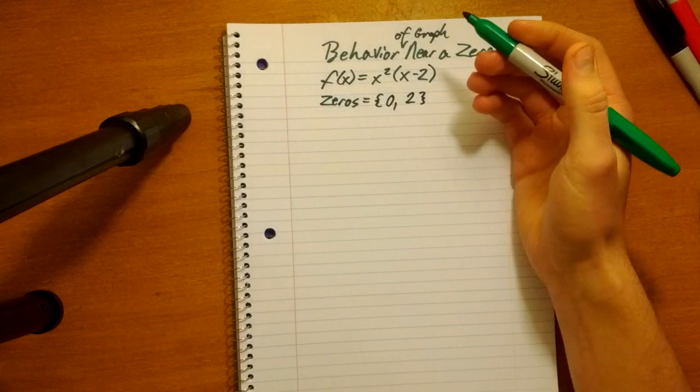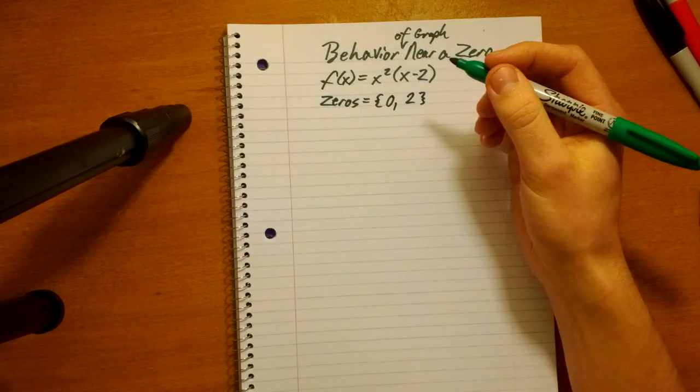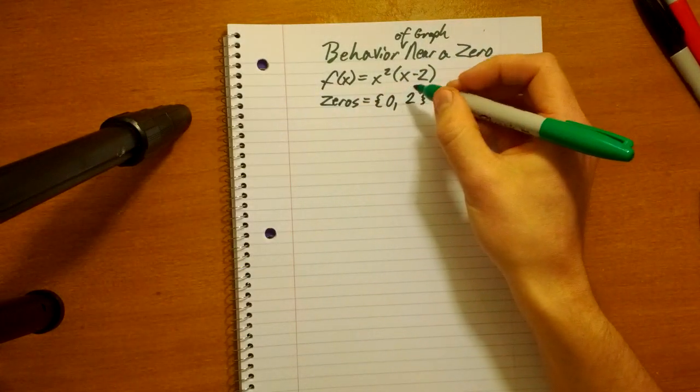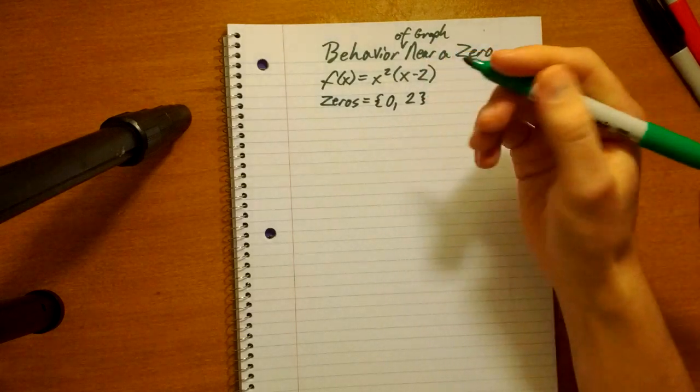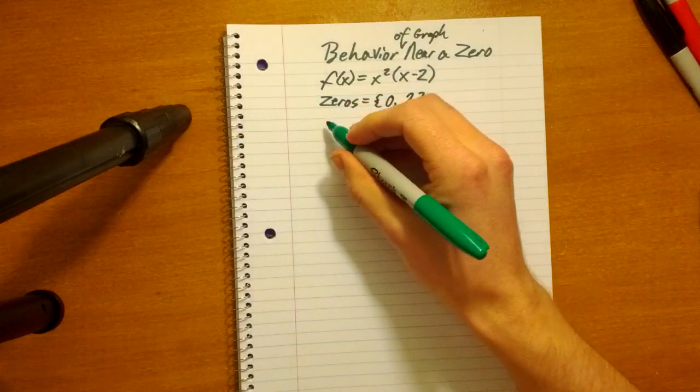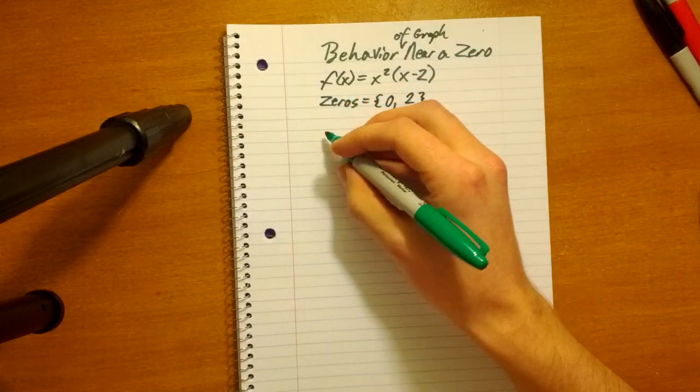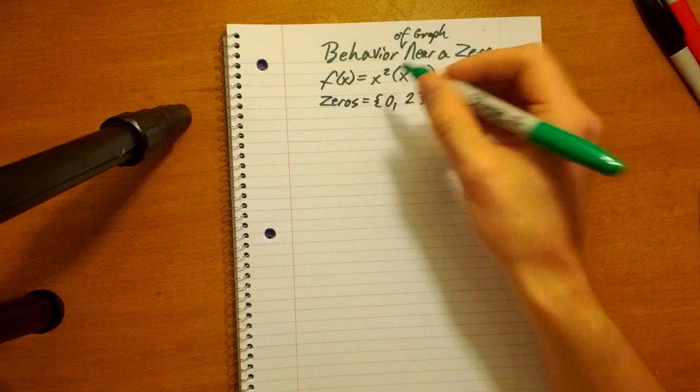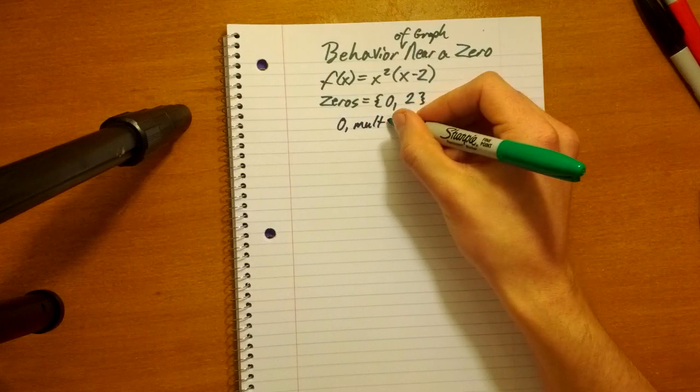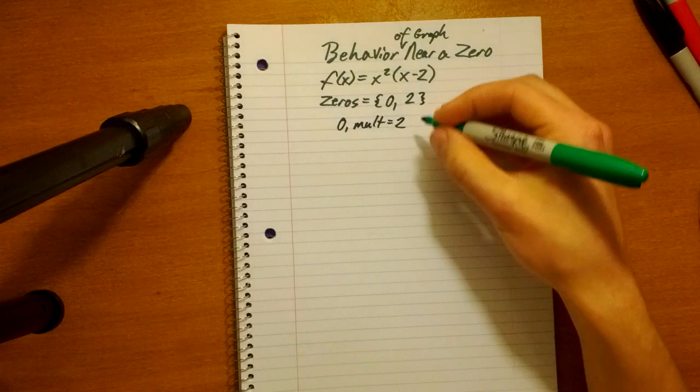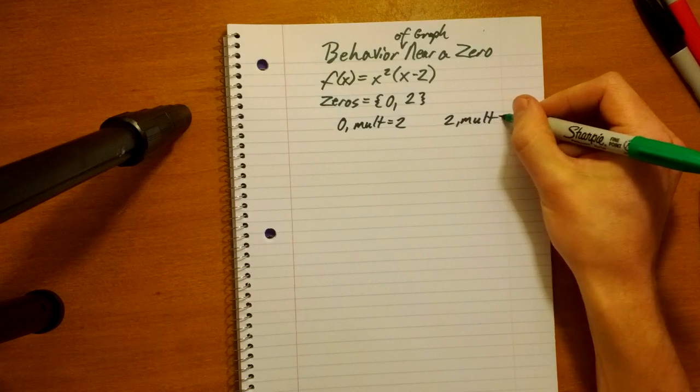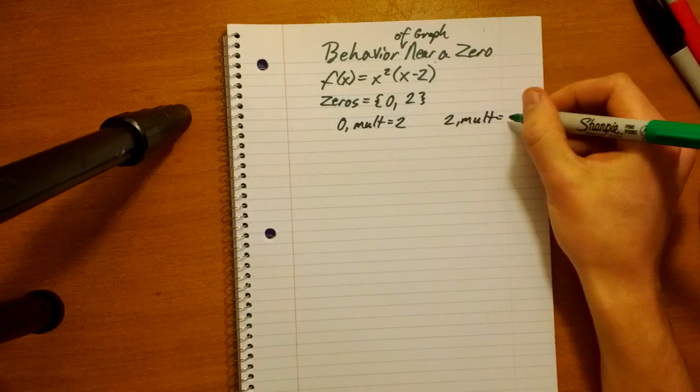So, we also can remember from one of the last videos, multiplicities. If you have an even multiplicity, the graph will touch the x-axis, and if you have an odd multiplicity, the graph will cross the x-axis. So, the zero, zero has a multiplicity of two, and the zero, two has a multiplicity of one.